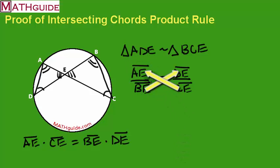Okay, I'm going to take AE times CE. And I'm going to multiply these two together, BE times DE.